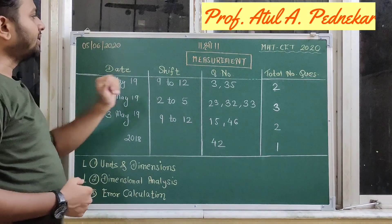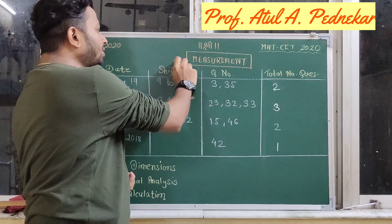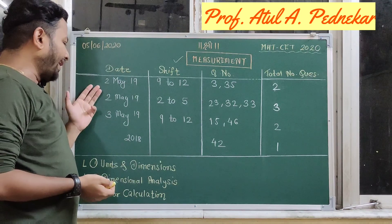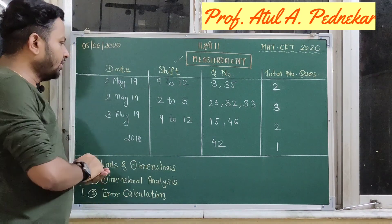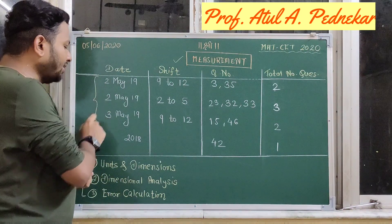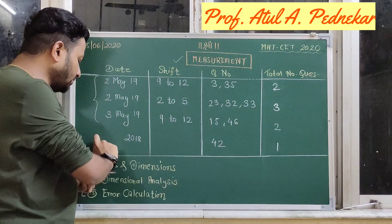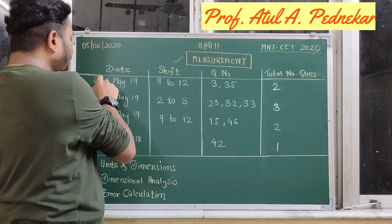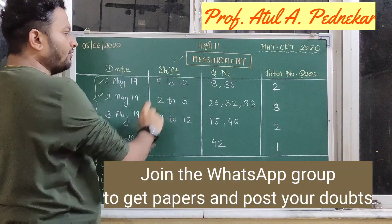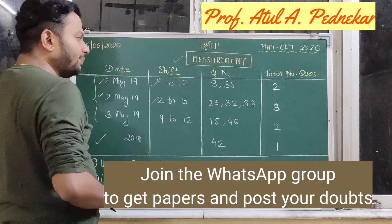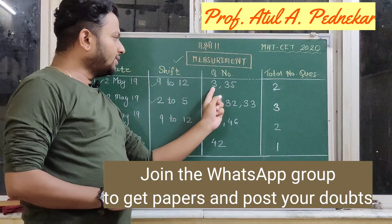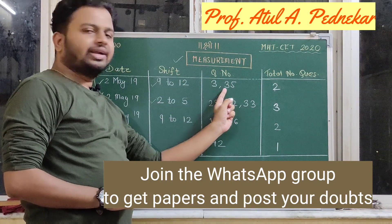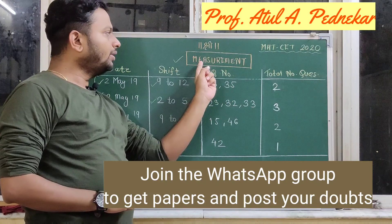Now, how will the analysis be? If we start with measurement, we have analysis of four different papers. Since 2019, I have analysis of three papers, and for 2018, I have analysis of one paper. On 2nd of May, there were two shifts — morning shift and afternoon shift. In the morning shift, there were two questions in this chapter, out of 50: question number 3 and question number 35 were from measurement.